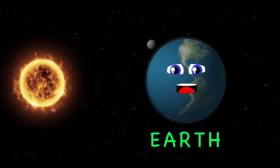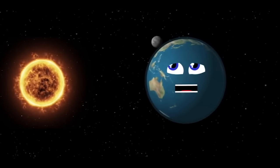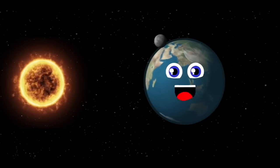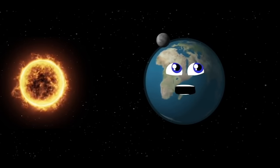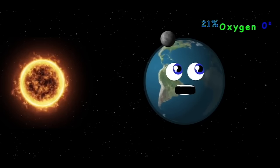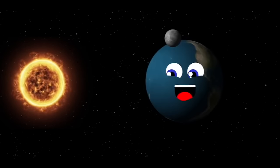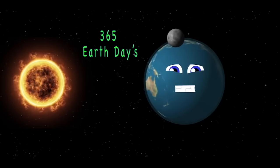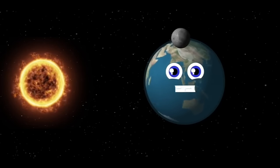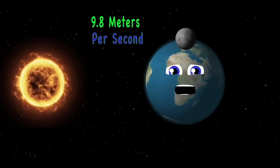I am the Earth, the only planet with organic life. With 8.7 million species, we all fight to survive. My atmosphere is 78% nitrogen, 21% oxygen, and a small percentage of other elements. Without my atmosphere, you would be frozen. It takes 365 Earth days to orbit the sun; 24 hours makes one day. Gravity pulls you down at 9.8 meters per second towards the ground.